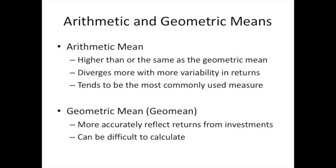In defining the geometric mean, it's often useful to compare it to the arithmetic mean. The arithmetic mean is the one you typically see in analysis and returns — anytime you see a prospectus, it will be the arithmetic mean. Compared to the geometric mean, the arithmetic mean will be higher, and it will diverge more the more variable the time series is.